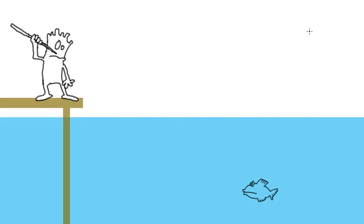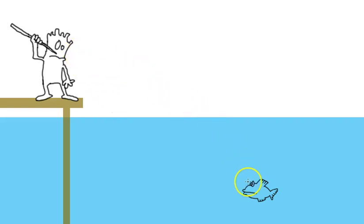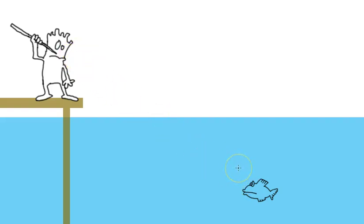I have a guy sitting on the dock, sometimes known as a pier — just a little wooden platform that stands out into the water. I've got the water below and the air above. And this guy wants to throw a spear at the fish down here. He wants to catch his fish. The question is, where should he aim to try to hit the fish?